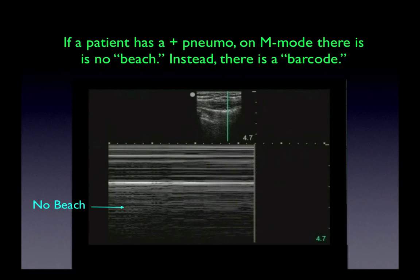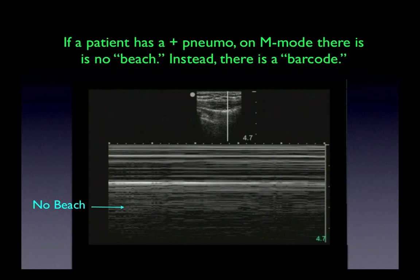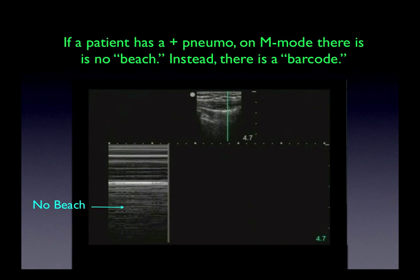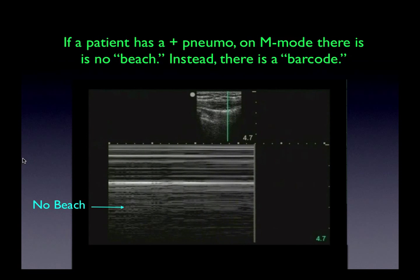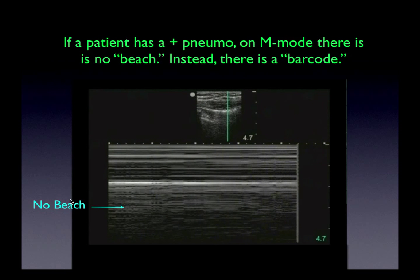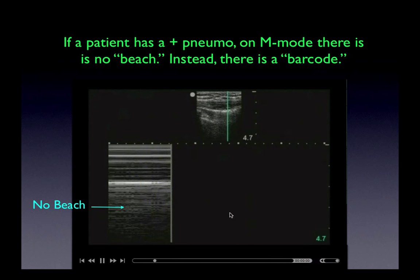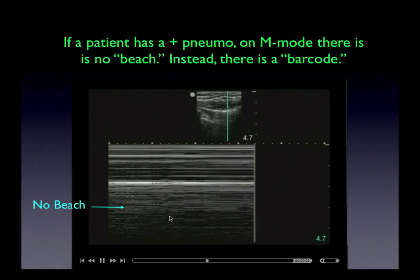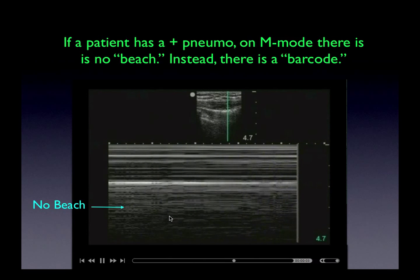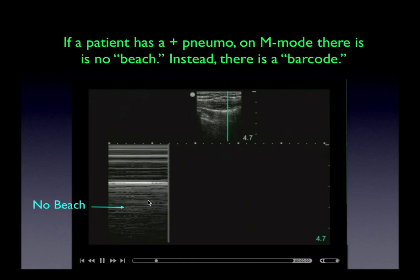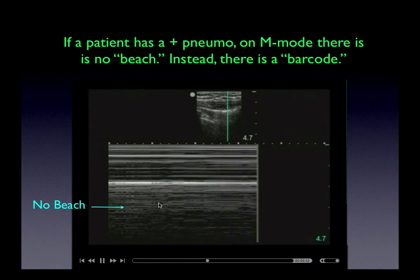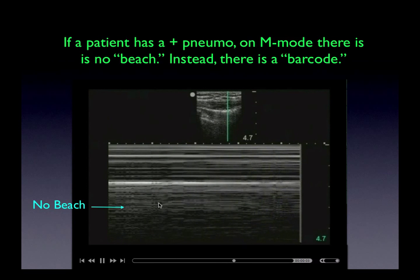Over here, we have M-mode in a loop. What it reveals is that there is no beach — no sandiness, if you will. This has been known as a barcode, and this barcode pattern is typical of someone with a pneumothorax.